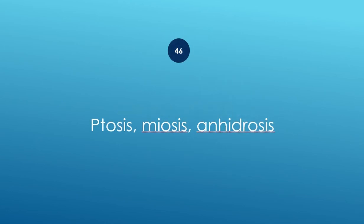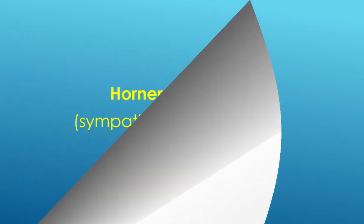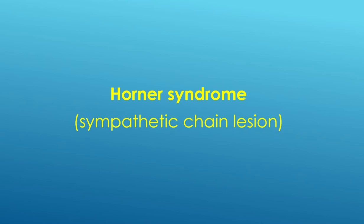Ptosis, miosis, and anhidrosis — Horner syndrome, sympathetic chain lesion.